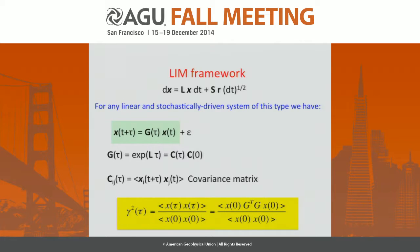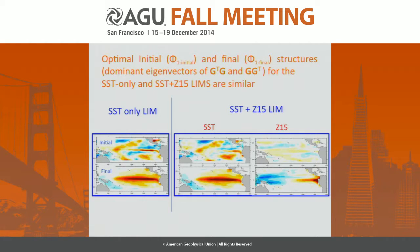If our initial condition projects on the eigenvector of the G-transpose-G operator with eigenvalues larger than one, then for that lag we will have growth. We are particularly interested in the leading eigenvector characterized by the maximum eigenvalue. The results are shown here for sea surface temperature on the left and for the extended LIM on the right, for a lag of six months. The SST-only LIM shows that this initial condition evolves after six months into a pattern similar to canonical ENSO, with maximum anomaly in the Niño 3 and Niño 3.4 regions.